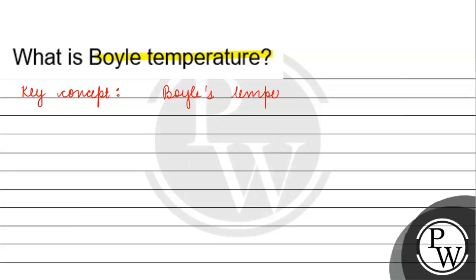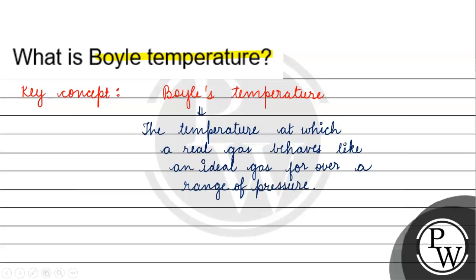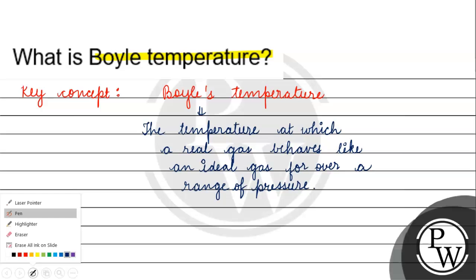Boyle's temperature is basically the temperature at which a real gas behaves like an ideal gas over a range of pressure. For over a range of pressure, we have the same temperature for which we have Boyle's temperature.